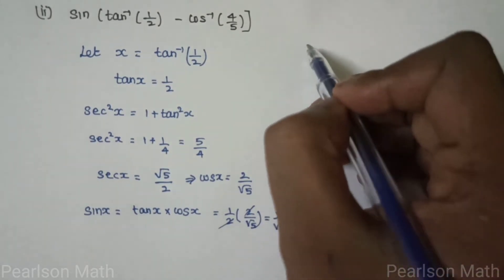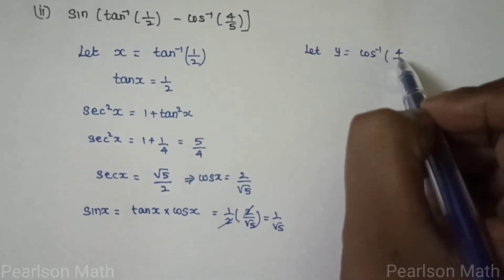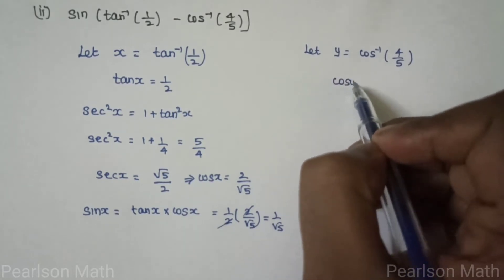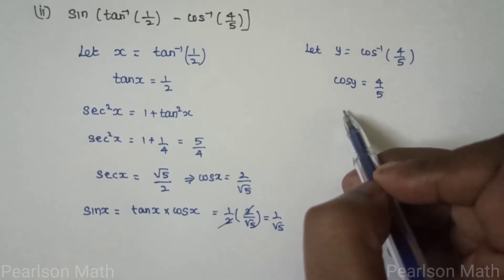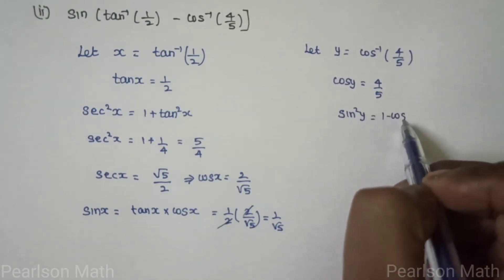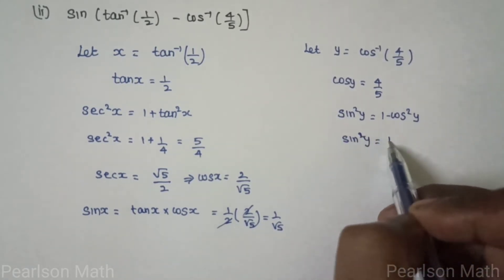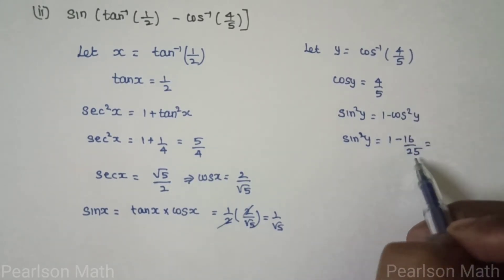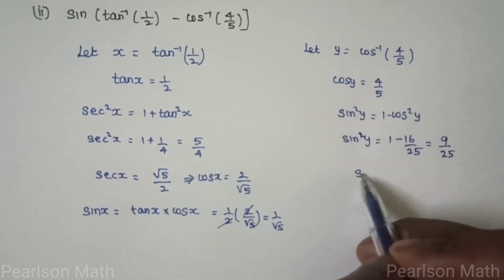Now let y equal to cos inverse of 4/5, so cos y equals 4/5. Using the identity sin squared y plus cos squared y equals 1, we get sin squared y equals 1 minus cos squared y equals 1 minus 16 by 25, so sin squared y equals 9 by 25. Therefore sin y equals 3 by 5.